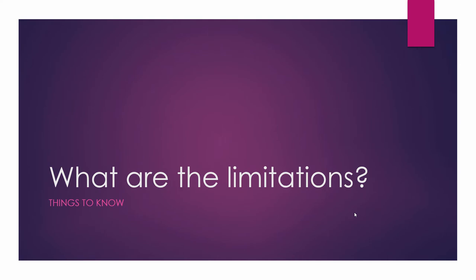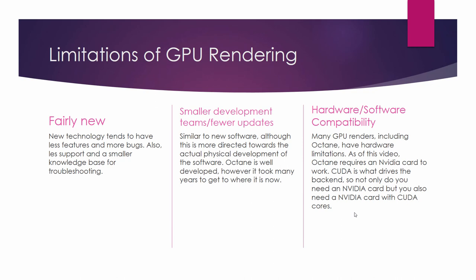What are the limitations? New technology tends to have fewer features and more bugs, as well as less support and a smaller knowledge base for troubleshooting. There are smaller development teams and fewer updates, similar to new software. Octane is well developed, however — it took many years to get to where it is now. Octane's community is actually awesome: they are responsive, knowledgeable, and more than happy to help. But this might apply to other GPU renderers out there, as Octane isn't the only one on the market.